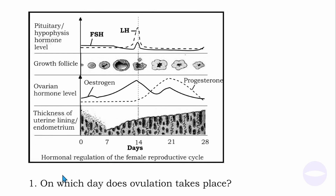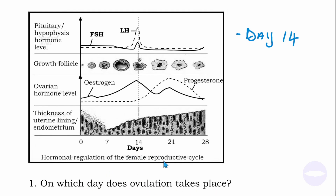Question number one: on which day does ovulation take place? Looking at the graph, ovulation is taking place at day 14. The answer is day 14.